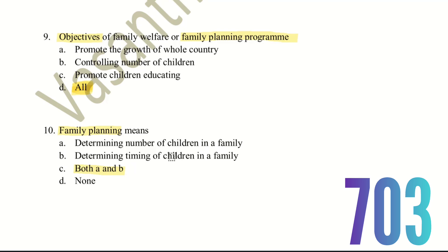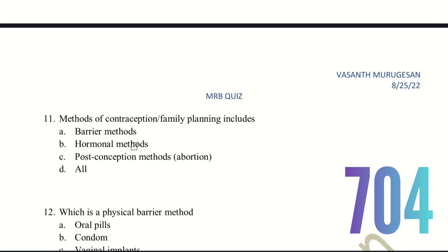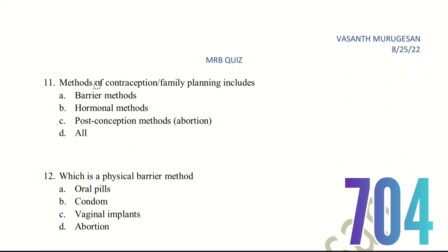For example, timing of children means spacing — having a child in 2000 and then waiting 3 or 4 years for the next. That is the timing aspect of family planning. Eleventh question: methods of contraception or family planning include? The choices are barrier methods, hormonal methods, post-conception methods (also called abortion), or all.